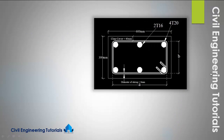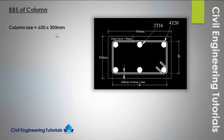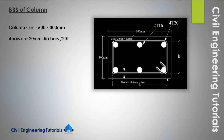This is the top view of the column. The column size is 600 into 300mm — this side is 600mm and this side is 300mm. We have 4 numbers of 20mm diameter bars at the corners: bar 1, 2, 3, and 4. These 4 corner bars are 20mm diameter.